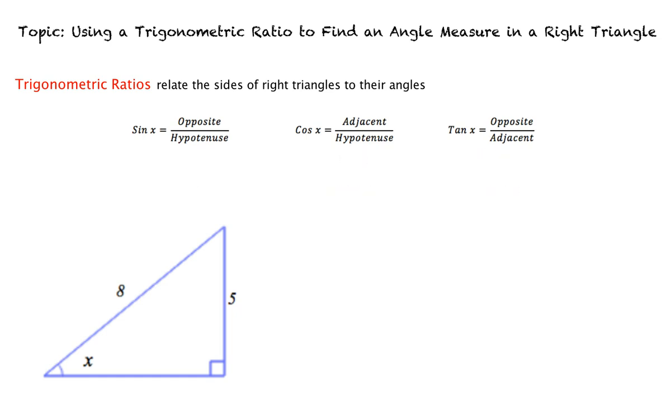How can we set up this problem? We will put x on one side of the equal sign, and since we are given the opposite length and the hypotenuse, we will write the inverse sine on the other side. This equation reads, x equals the inverse sine of opposite over hypotenuse.